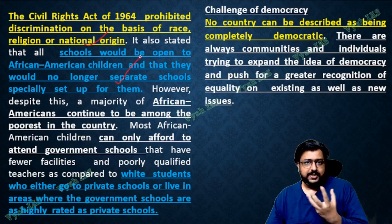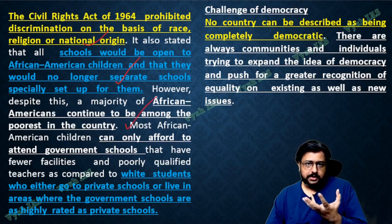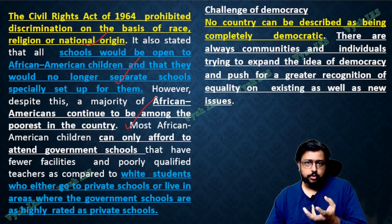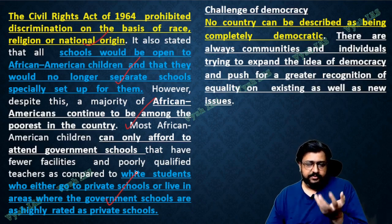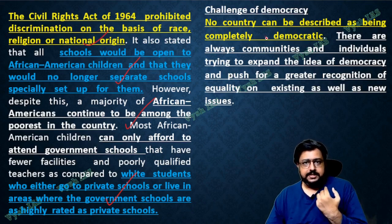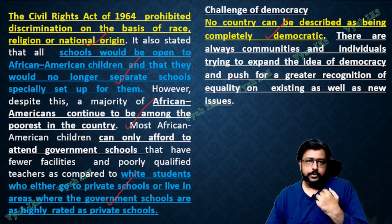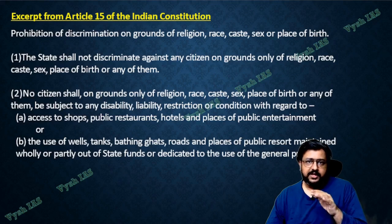Earlier there were separate schools for Africans and separate schools for Americans — then that problem got resolved. But American schools were very costly private schools, and African students, even though discrimination legally ended, could not afford the schools. So it took a long time for private schools to normalize everything. In democracy, as I told, a lot of challenges are there. No country can be fully democratic — there will always be certain exceptions and certain things needed for the lower strata so they can rise up. Never say fully democratic, fully socialist, fully secular — that can never happen in any country.